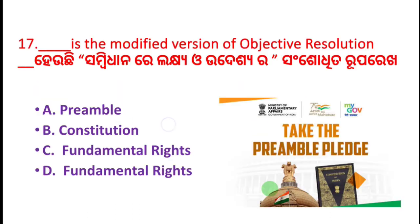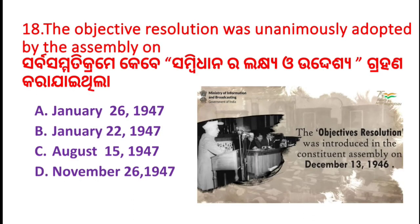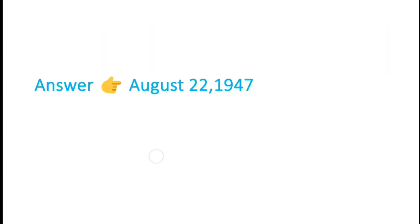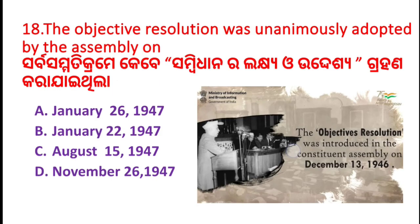Das is the modified version of the objective resolution. The resolution was unanimously adopted by the Assembly in which year? Option C: August 15, 1947. Option D: November 26, 1947. The correct answer is August 22, 1947.